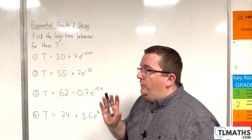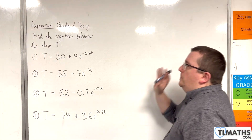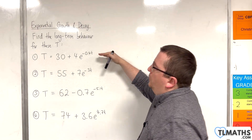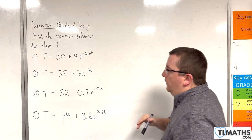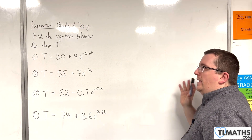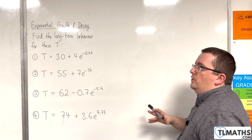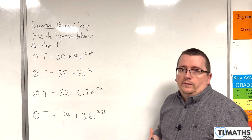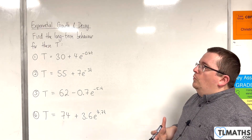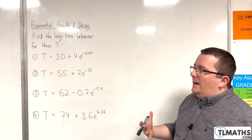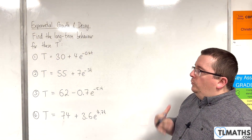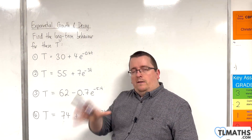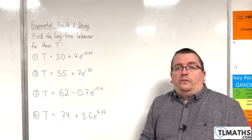What we need to be able to do is to look at an equation like each of these and be able to read off what the long-term behaviour is in each of these cases. Without having to really do much analysis on it, we should just be able to look at it and go, right, the long-term behaviour is this.